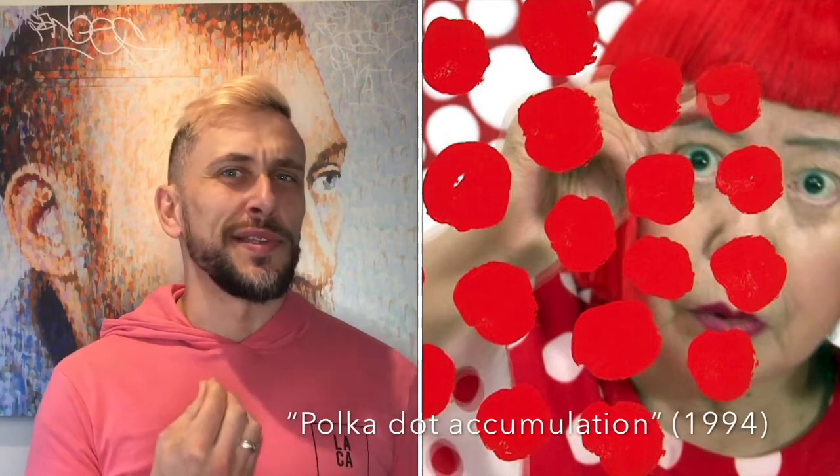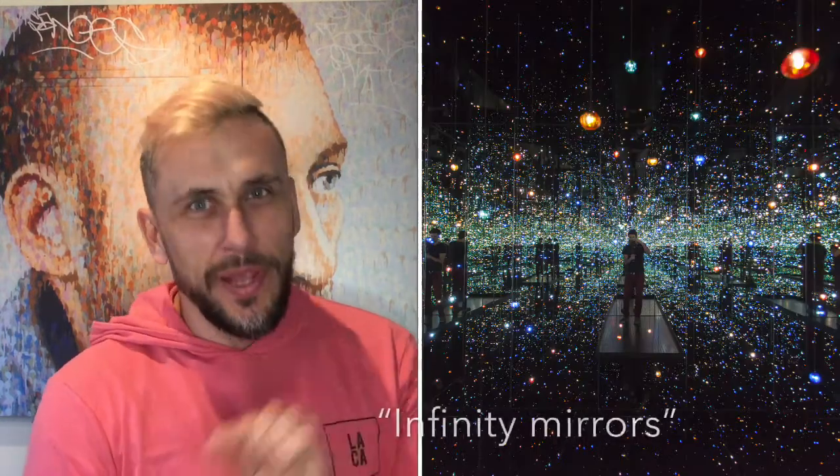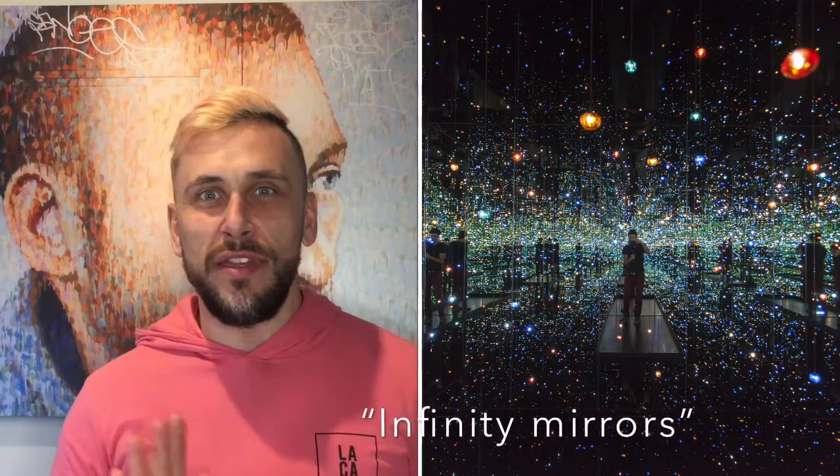She loved polka dots and she saw the polka dot as part of outer space, part of the cosmos, that our planet Earth, all the planets around, all the stars that surround in space are dots. So the big huge picture was all about the dots, but then she also said that the smaller picture, the microscopic small cells that make up everything, is also made up of dots too.